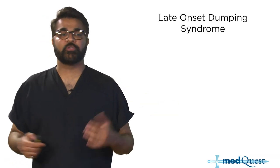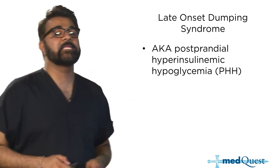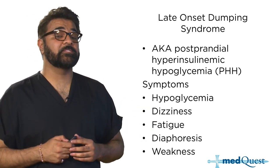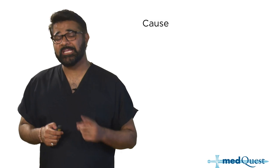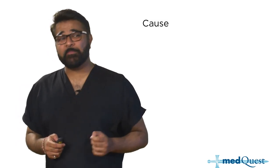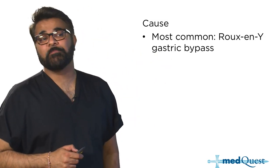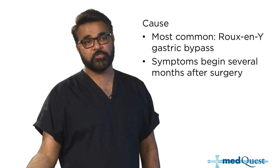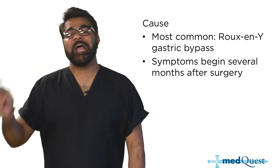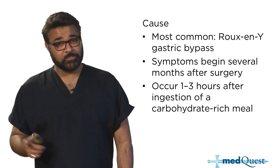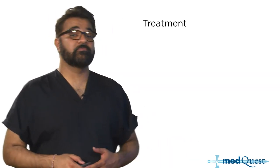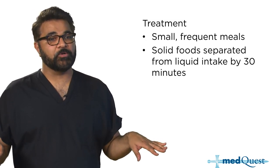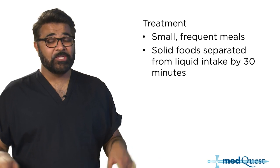Late-onset dumping syndrome is also known as postprandial hyperinsulinemic hypoglycemia. These patients are hypoglycemic, dizzy, fatigued, with diaphoresis and weakness. It is most commonly caused by Roux-en-Y gastric bypass, with symptoms beginning several months after surgery and occurring one to three hours after a high-carbohydrate meal. Treatment is the same — small, frequent meals with liquids and solids separated by 30 minutes. If these measures fail, start octreotide, which slows the gut and allows proper absorption.